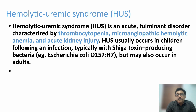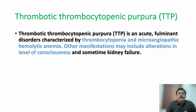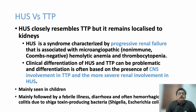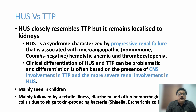HUS can also occur in adults and as non-Shiga toxin HUS, sometimes due to other infections like streptococci. TTP has similar clinical findings to HUS, but altered mental status and low GCS are very common in TTP, while kidney failure is less prominent. In summary: HUS has more renal involvement, TTP has more CNS involvement; HUS is mainly in children, TTP mainly in adults.